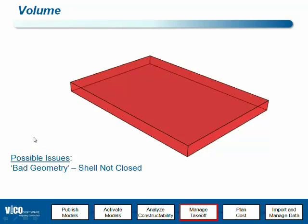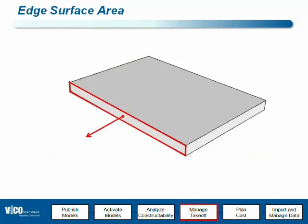Both net volume and gross volume are calculated that way. That's a little module that we call for each element, and that module returns the net and gross volume values. Edge surface area is another type of calculation that takes place during the activation, and we calculate those numbers using classification of surfaces.